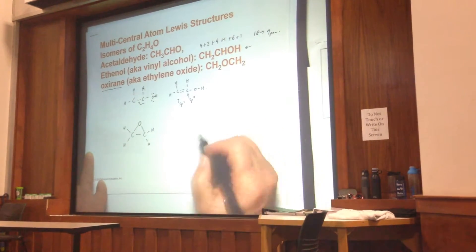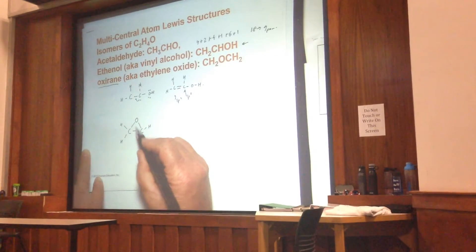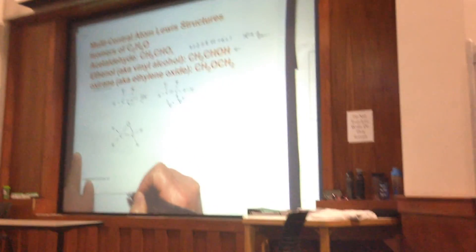Here we have 9 pairs of electrons. We have 1, 2, 3, 4, 5, 6, 7, that are taken up in this carbon, carbon,